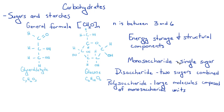You have disaccharides, which are two individual monosaccharides combined. For example, table sugar is called sucrose, which consists of one molecule of glucose and one molecule of fructose. Polysaccharides are large molecules composed of a bunch of different monosaccharide units. Starch is a polysaccharide of glucose molecules, and starches contain hundreds and hundreds of molecules of glucose, all bound together.